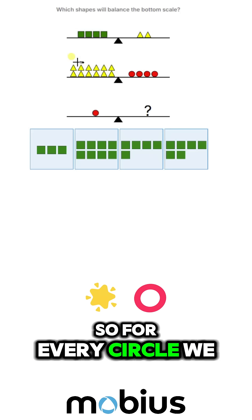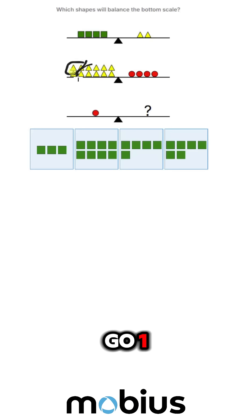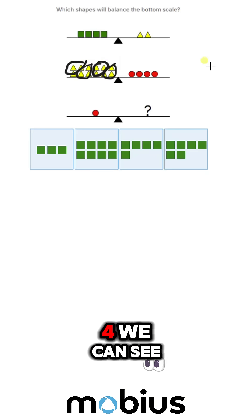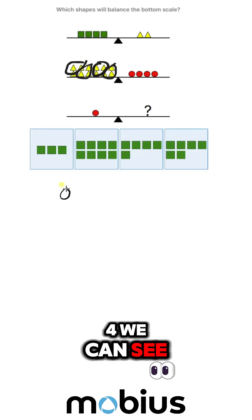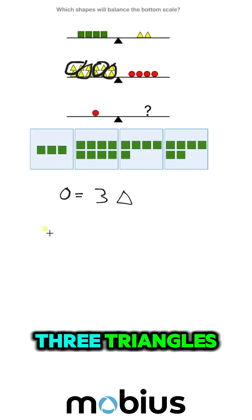So for every circle we count one, two, three, four — we can see that a circle equals three triangles.